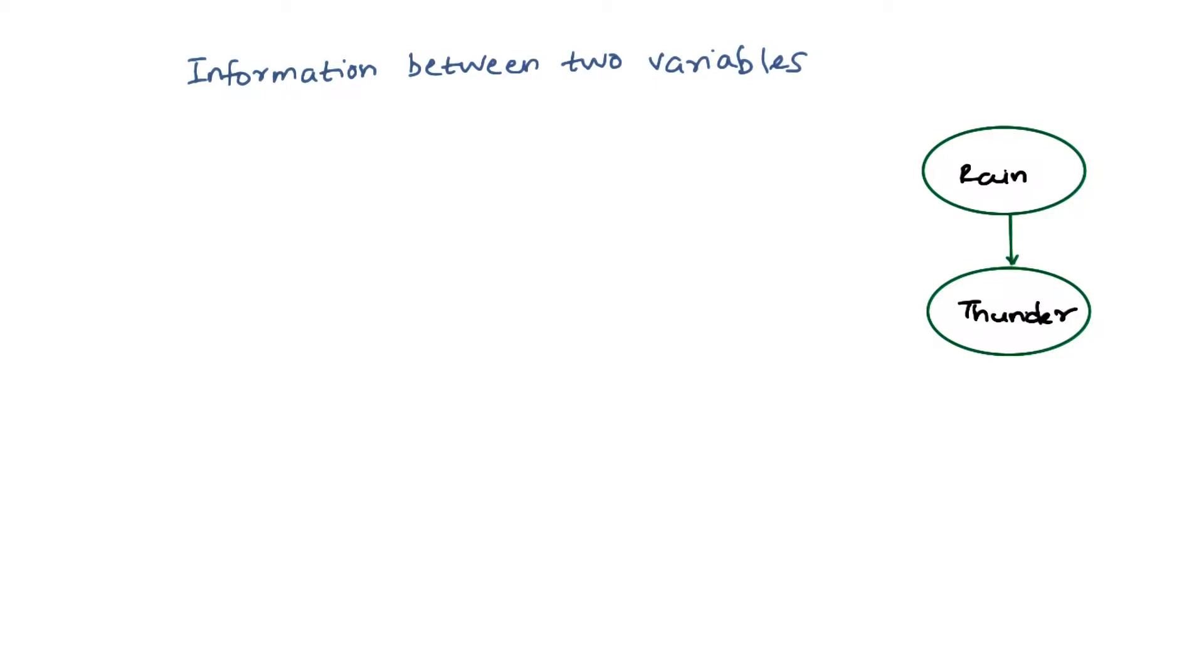Now we know what is the information in one random variable. Assume that I told you to predict if you're going to hear thunder or not. That's very difficult. But what if I tell you if it is raining or not? Your guess regarding the thunder is going to be significantly better. So there is some information in this variable that tells you something about this variable.